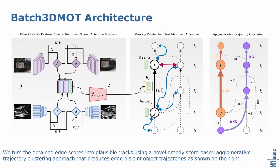We turn the obtained edge scores into plausible tracks using a novel 3D score-based agglomerative trajectory clustering approach that produces edge-disjoint object trajectories, as shown on the right.